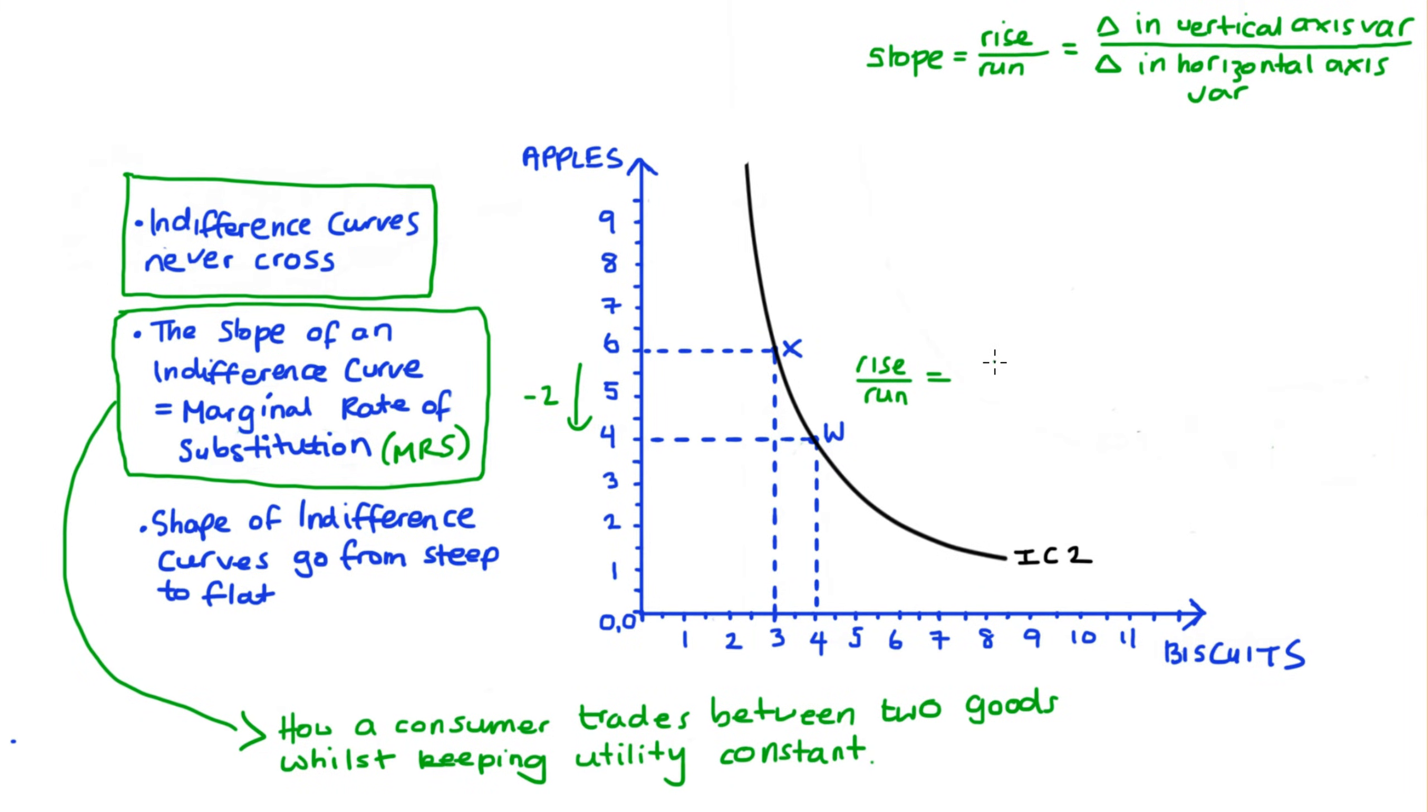Well, our change in our vertical axis is negative two. We're going from six to four apples. And our change in our horizontal axis is one. We're going from three to four biscuits. So it follows that we would be willing to trade off two apples for one additional biscuit. To say this in another way, in this region, we are valuing two apples the same amount as we value one biscuit.